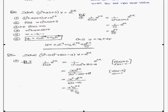Find the complementary function individually. This is the particular integral. Therefore, the general solution is y = complementary function + particular integral. Thank you.